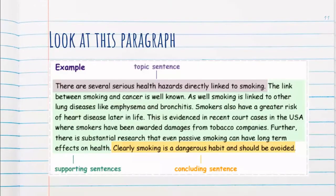Now look at this paragraph where we have highlighted the different parts. The first sentence is the topic sentence. Everything in light blue is the supporting sentence. And finally, we have a concluding sentence. Please read this paragraph in your mind, and we will discuss in the Zoom class whether the supporting evidence did support the topic sentence.